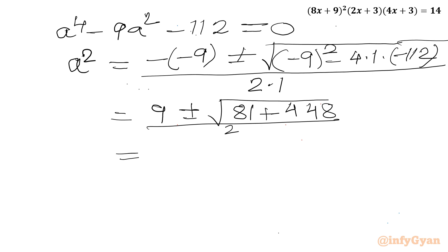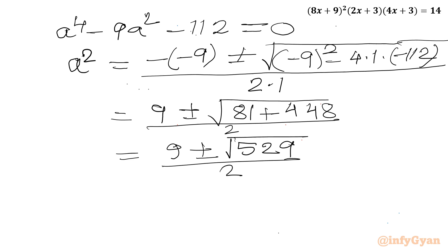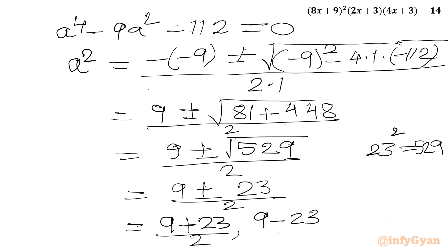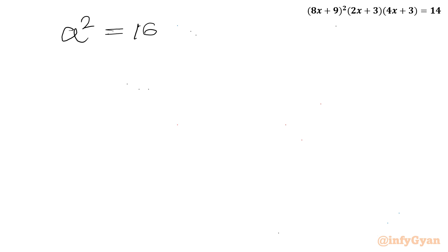I can write 9 ± √(81 + 448) over 2. Now 81 + 448 is 529, so 9 ± √529 over 2. We know that 23² = 529, so √529 = 23. So we get (9 + 23)/2 = 32/2 = 16, and (9 − 23)/2 = −14/2 = −7. So a² equals 16 or −7.